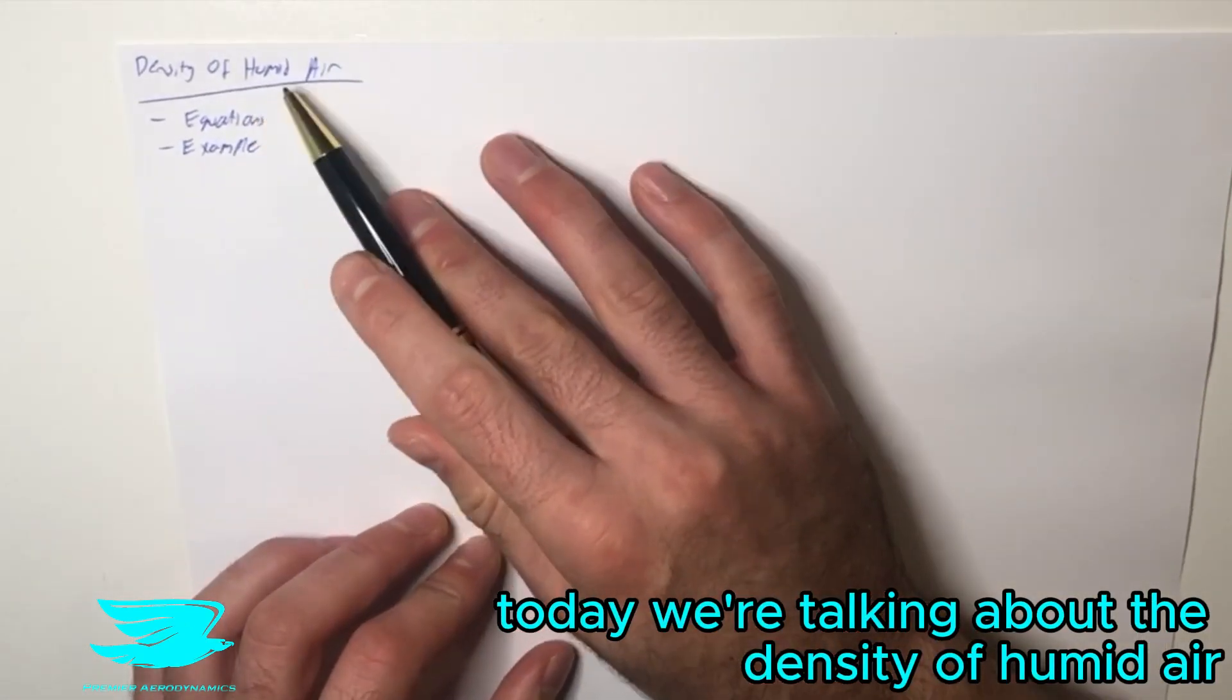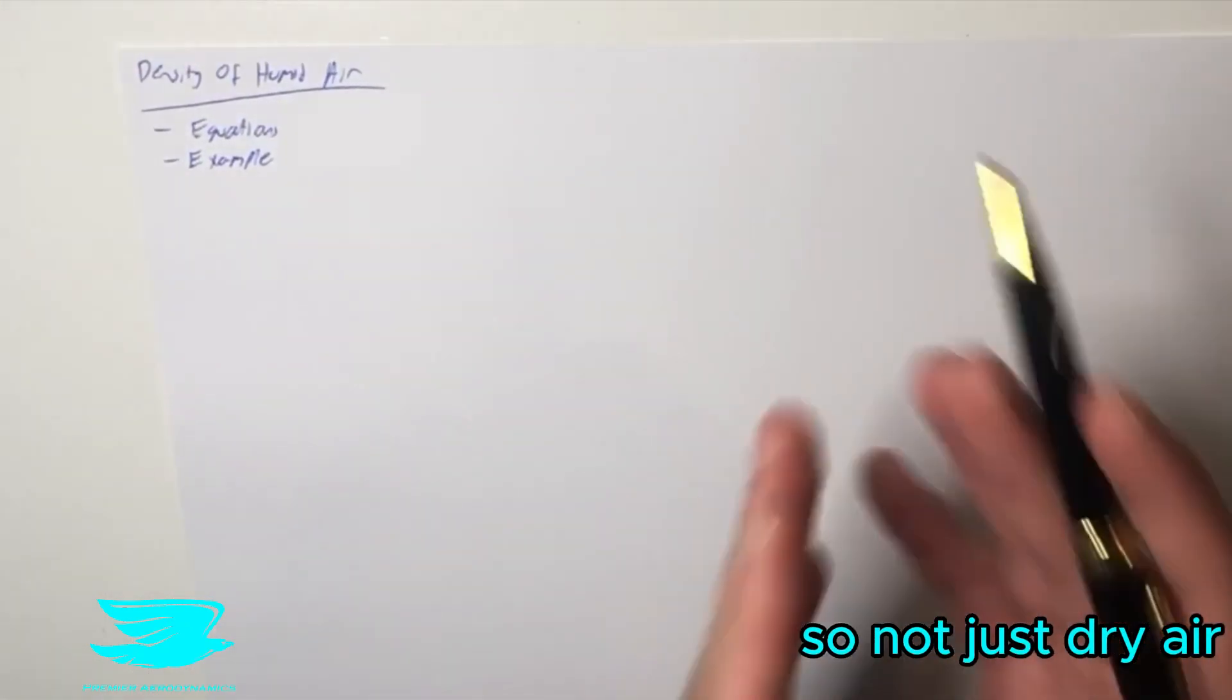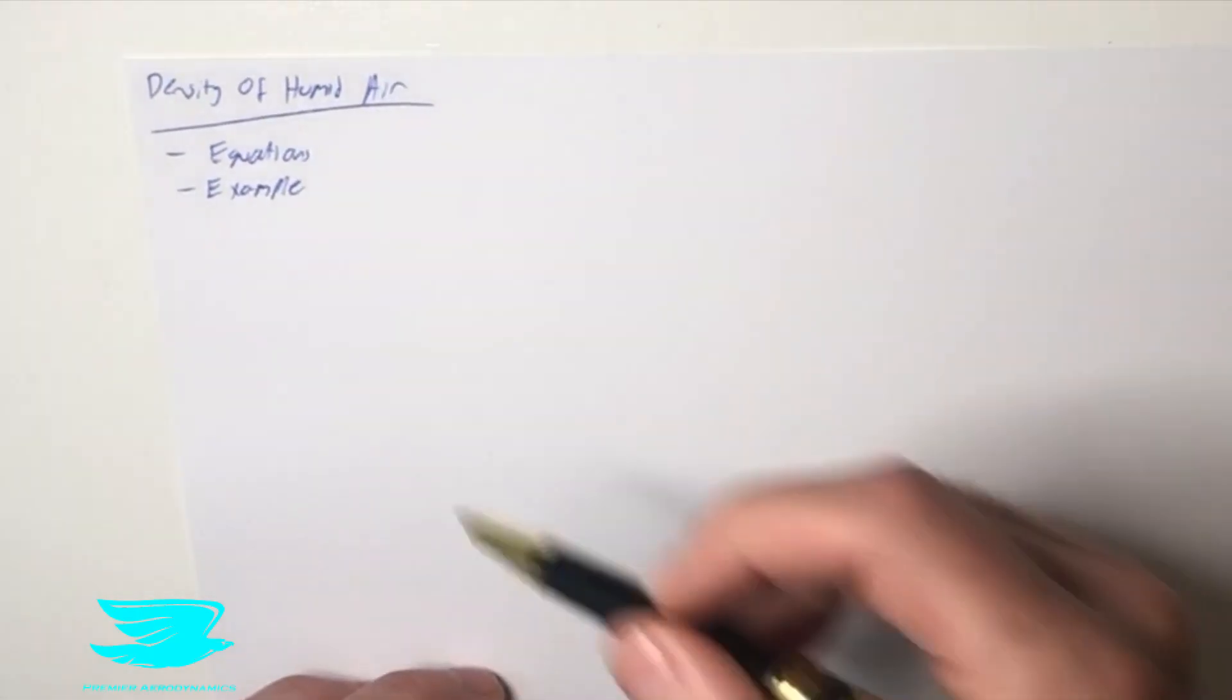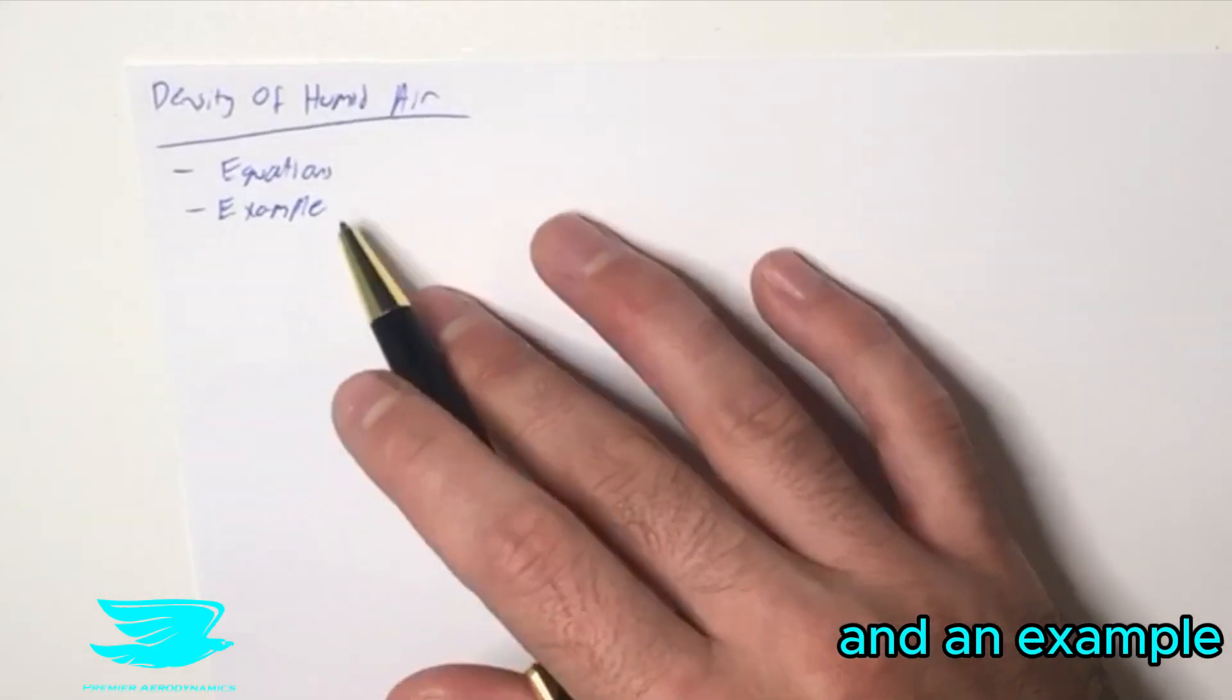What is up amigos? Today we're talking about the density of humid air, so not just dry air, but when we have water in the air as well. There's always some form of humidity. We'll be going through equations to use to calculate it, and an example.